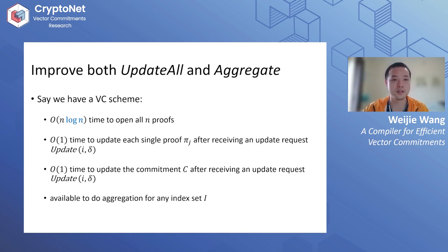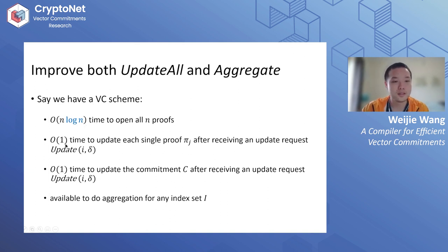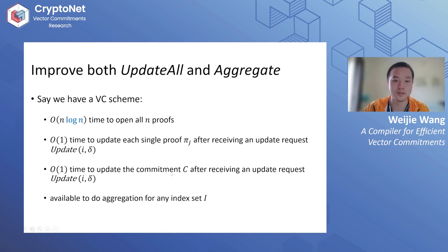Suppose we have a vector commitment scheme with O(n log n) time to open all proofs — actually the log n can be relaxed to any polylog. We need O(1) time to update each single proof after receiving an update request, and O(1) time to update the commitment. Most importantly, we need the scheme to have an aggregation algorithm, but we don't care how it is done — we just need one to exist.